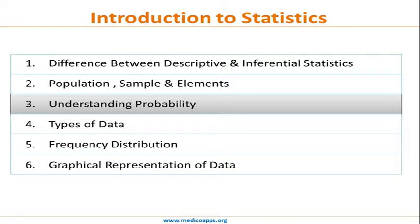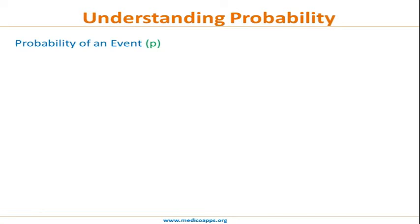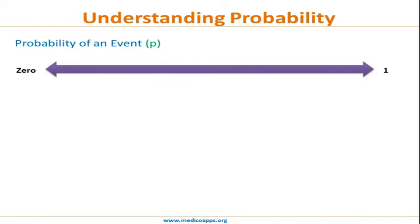The third part is understanding probability. All of statistics and its assumptions are based on certain probabilities, so we will look into some basic concepts of probability useful for our biostats masterclass. Probability of an event can be described as a spectrum from zero to one — the minimum value is zero and the maximum is one.